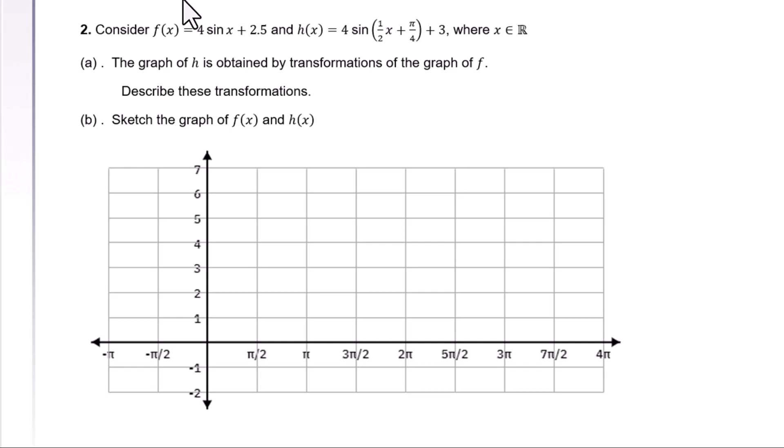Let's compare f(x) and h(x). We have 4sin(x) and 4sin(something) here. 2.5 changes to 3. So basically, we can write h(x) = 4sin(...).